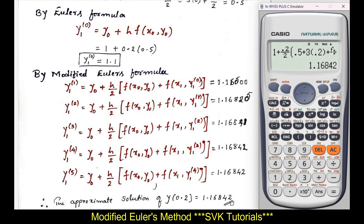This is the easy way of solving the modified Euler's method. This is one of the best methods for solving this type of problem. If you have any doubts, please leave a comment and I will clarify your doubts. Thank you all for watching my YouTube channel — please subscribe if you like the content.